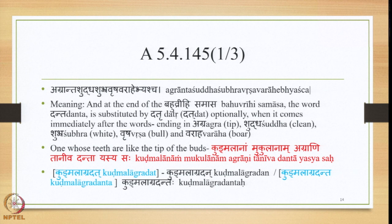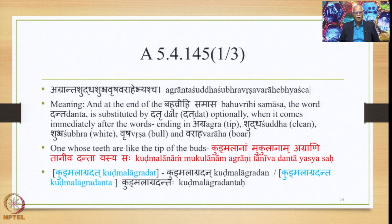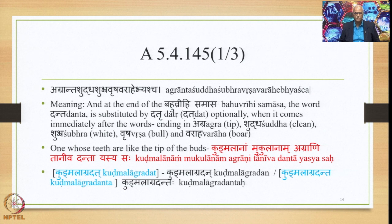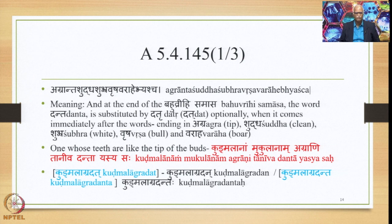Then we go to the next Sutra, 5.4.145, which is Agraanta Shuddha Shubhra Vrusha Varahebhyascha. What this Sutra means is that at the end of the Bahuvrihi Samasa, the word Danta is substituted by Dathru optionally, when it comes immediately after the words ending in Agra (meaning tip), Shuddha (meaning clean), Shubhra (meaning white), Vrusha (meaning bull), and Varahe (meaning boar).